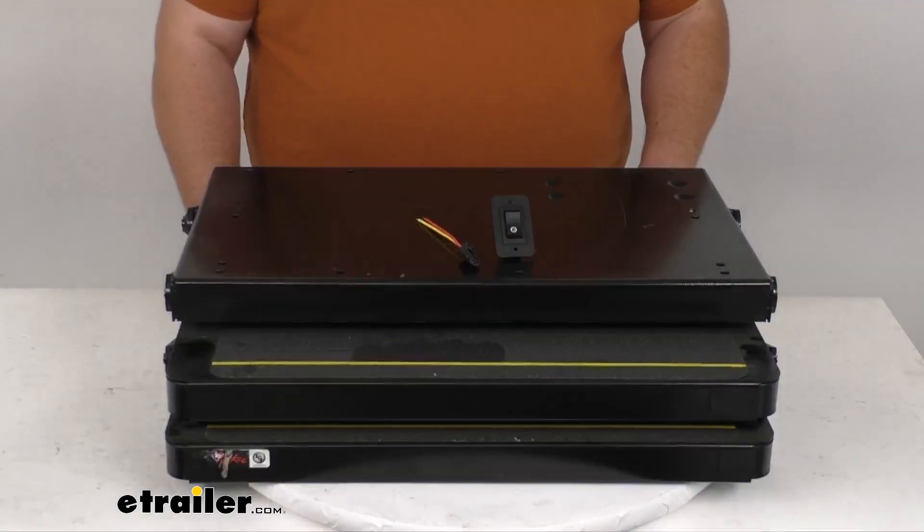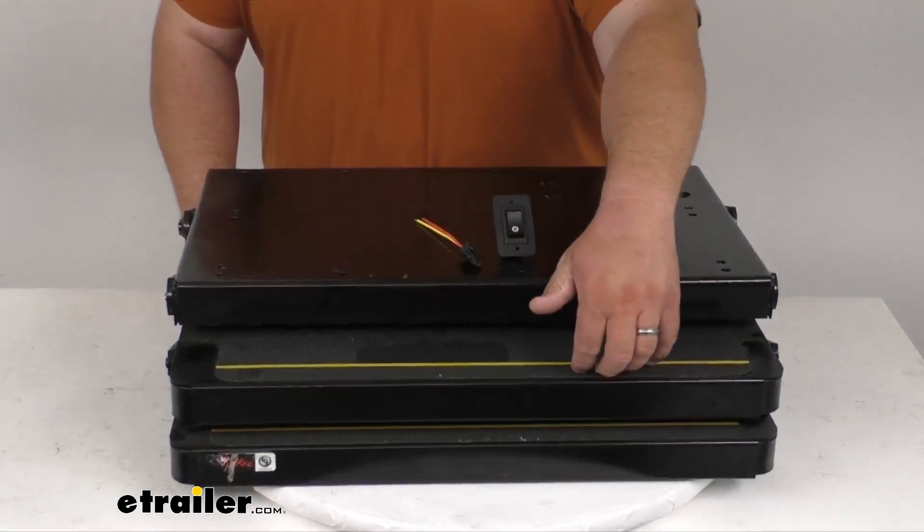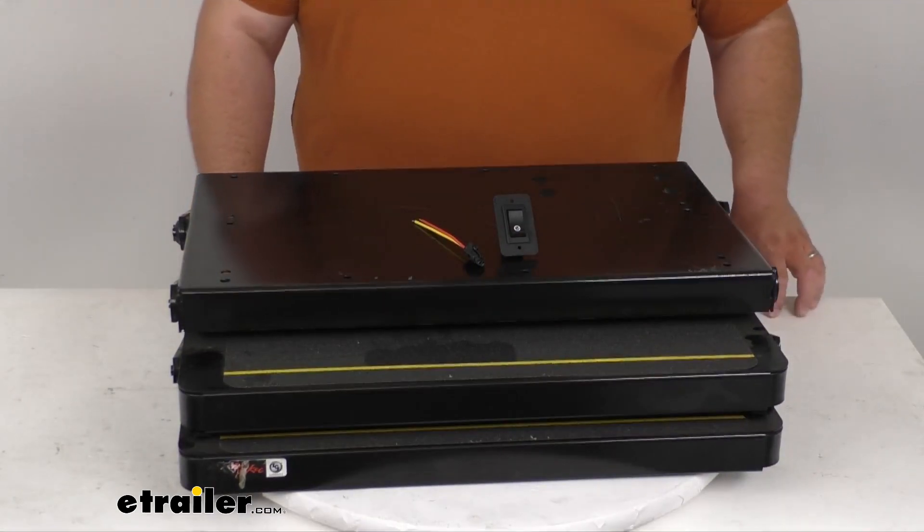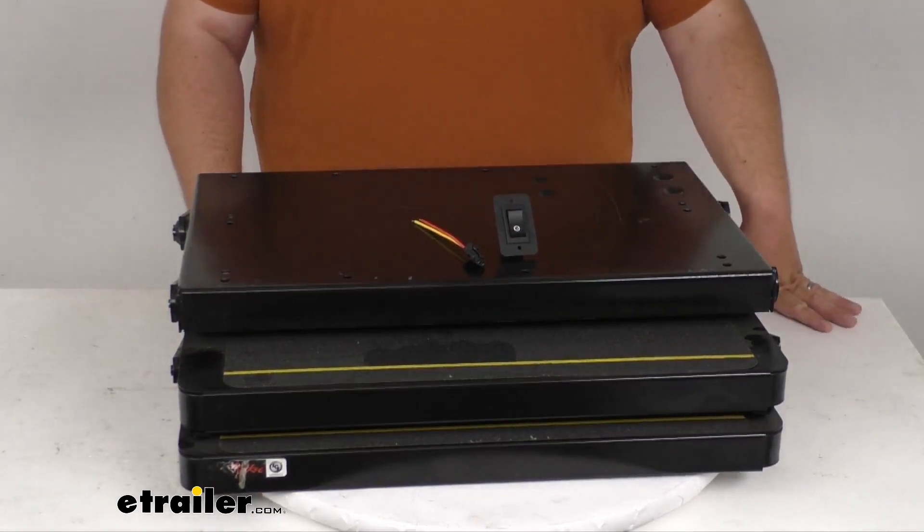They also have a non-slip tread that you can kind of see here. It's very easy to see. It's got a nice reflective strip there in yellow on the step surface. All the metal here is a nice sturdy heavy duty steel.